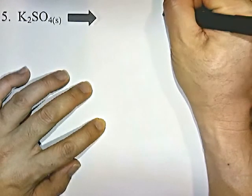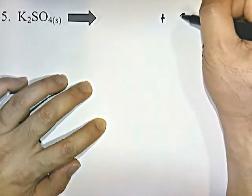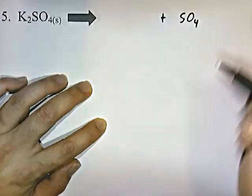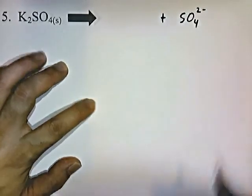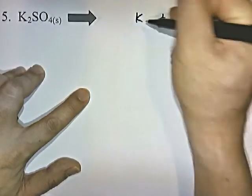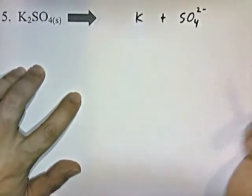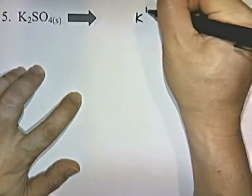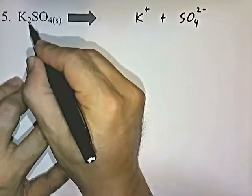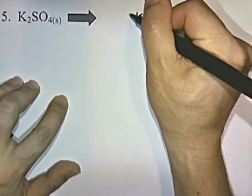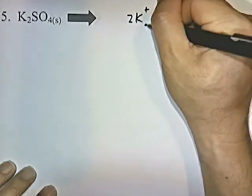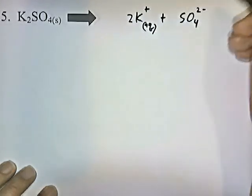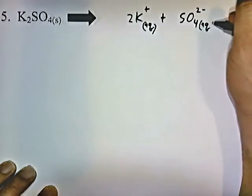K2SO4: SO4 is sulfate, and sulfate has a negative 2 charge. Potassium K is in group 1 on the periodic chart, so it's going to have a plus 1 charge. This 2 we swing in front. And there's our answer — that's how it dissociates.